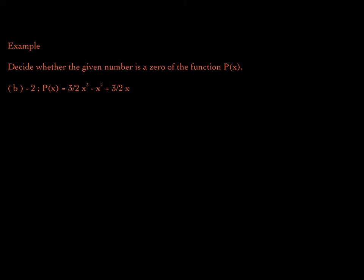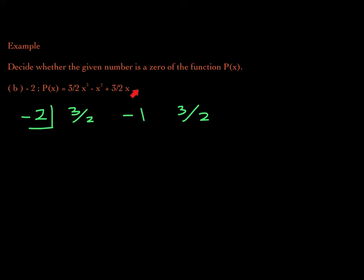For the second part of this example, we want to determine whether negative 2 is a zero of this function — a cubic: (3/2)x³ − x² + (3/2)x. Again, we're going to use synthetic division, checking negative 2. My coefficients are 3/2, negative 1, 3/2. What's really important is that this function is missing the constant term (degree 0). Therefore, we must write a 0 for the missing constant term. If you're missing any of the powers, you must insert a 0 for that missing term.